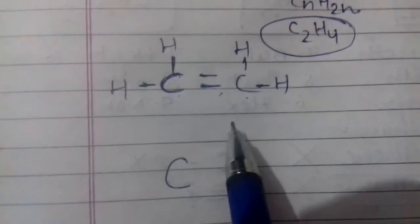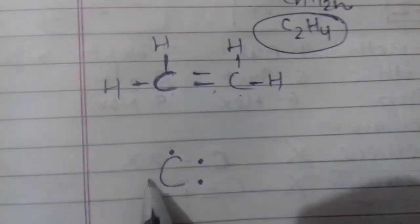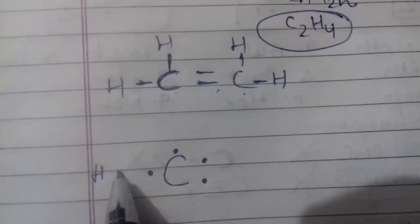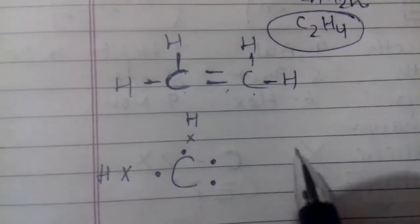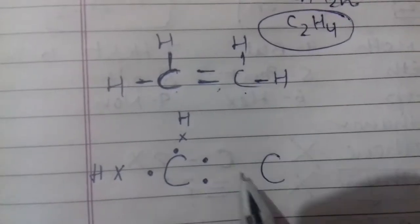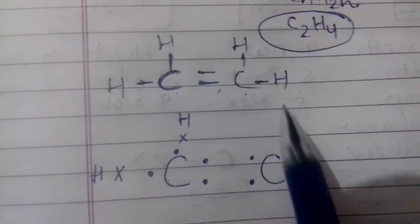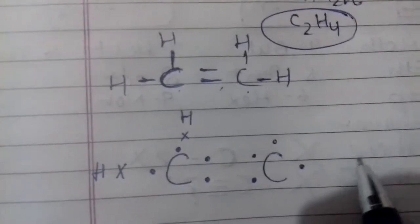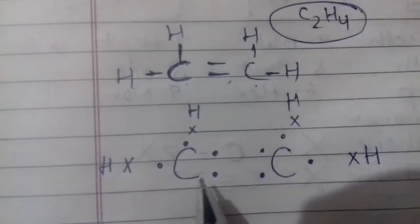यह तो इसकी bond structure है। अब electron dot structure में जितने bond हैं, उसी के according हम इसमें dot show कर देंगे। यहाँ पे double bond है, तो इस carbon के 2 electron सामने, ऊपर की तरफ एक bond है और एक side में एक bond है। यहाँ hydrogen present है, तो hydrogen का electron हम cross से show कर देंगे। दूसरा carbon है - इसमें 2 bond पीछे की तरफ बने हैं, तो 2 dot electron show कर दिए, और एक ऊपर और एक side में electron show कर दिए।